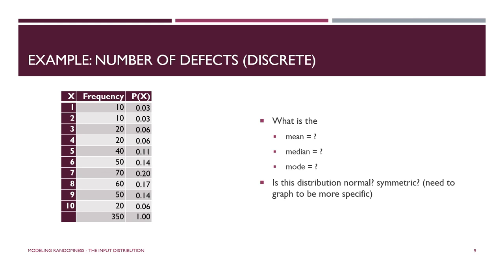Here is another example of discrete data collected into a frequency distribution, but not graphed — I'll leave that exercise to you, along with computing the mean, median, and mode. The variable x is number of defects, with values from 1 to 10. The frequency of each value is laid out, and we have 350 observations. The relative frequency is also provided, which will be a big help when we want to construct a probability distribution.